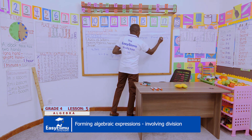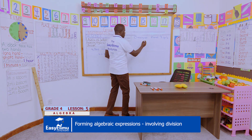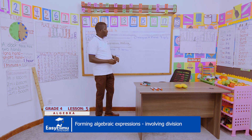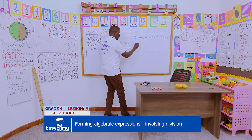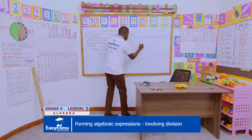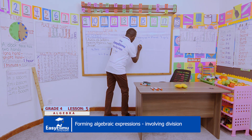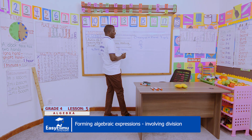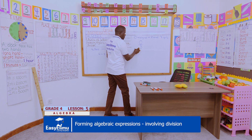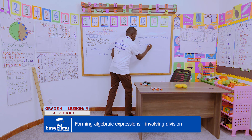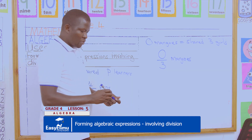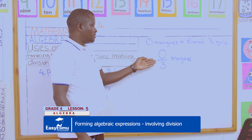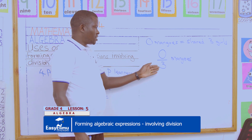We want to share all mangos among three girls. So we divide all mangos by three. The algebraic expression is: all divided by three mangos. That is the number of mangos each girl gets — all divide by three. That is how we form an algebraic expression involving division.